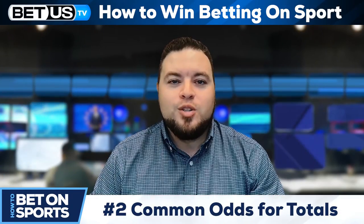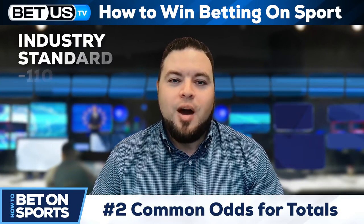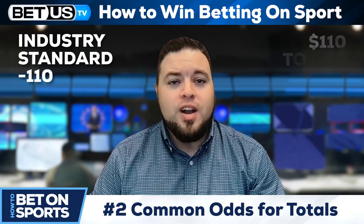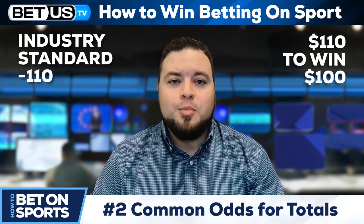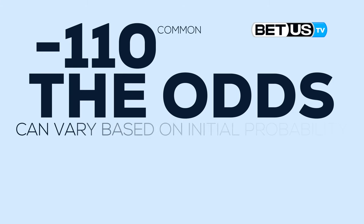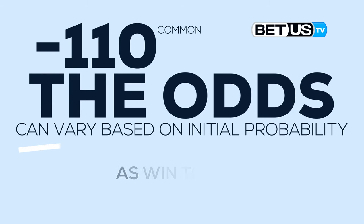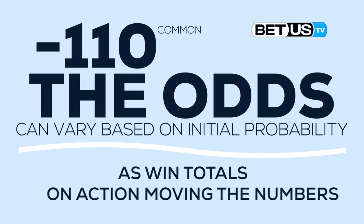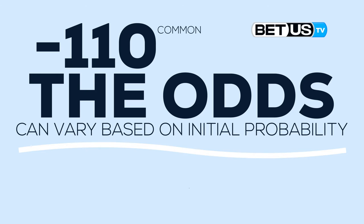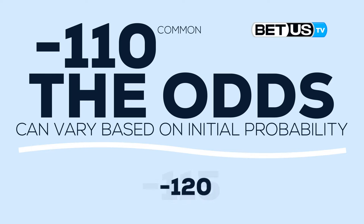The most common odds for totals is the industry standard minus 110, which means a bettor would have to wager $110 to win $100. This is the same as most point spreads. While minus 110 is common, the odds can vary based on initial probability, such as with win totals, or on action moving the numbers. If a total is about to change, you can see it jump to minus 105 and then to plus 100, or on the other side to minus 115 or minus 120, before it eventually moves half a point or so.